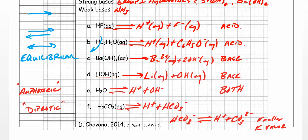Next, barium hydroxide. We've already said that Group 1 hydroxides and the last two in Group 2 are strong bases, so barium hydroxide is definitely a strong base. It dissociates into Ba²+(aq) plus 2OH-(aq). Notice the OH- - this is an Arrhenius base because it's releasing OH- ions, as opposed to the acids which release H+ ions. Similarly, lithium hydroxide is a strong base - Li+(aq) plus OH-(aq).